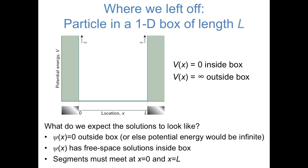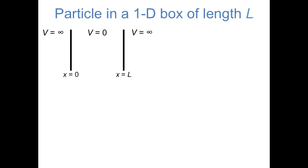And finally, because quantum mechanical wave functions have to be continuous, these different segments of the wave function have to meet each other at the edges of the box. In other words, if the wave function has to be equal to zero outside the box, the wave function inside the box has to reach zero at the edges. So let's define our one-dimensional box as existing from x equals zero to x equals some length L.